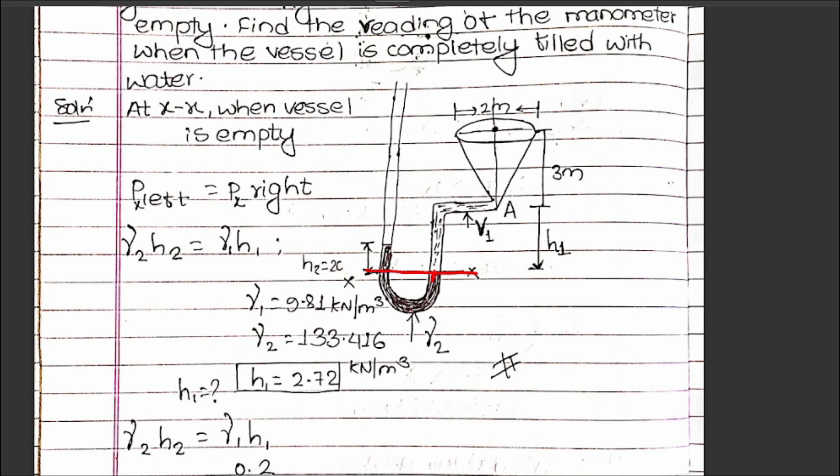At the same elevation, the pressure at one point equals the pressure at another point. So at the datum line, the pressure on the left side equals the pressure on the right side. We'll use this pressure balance.